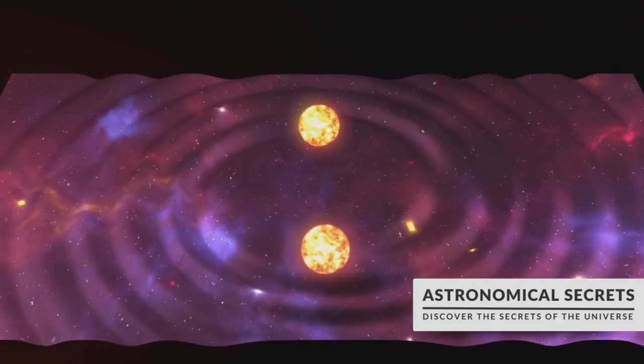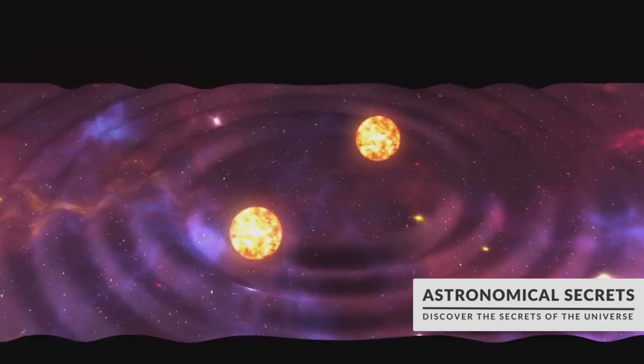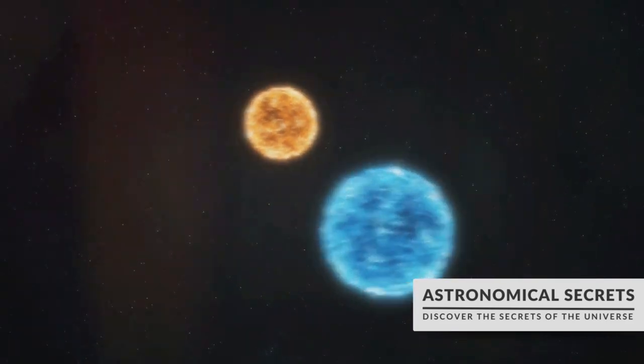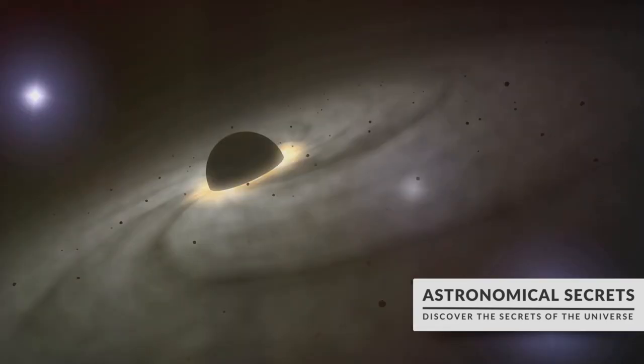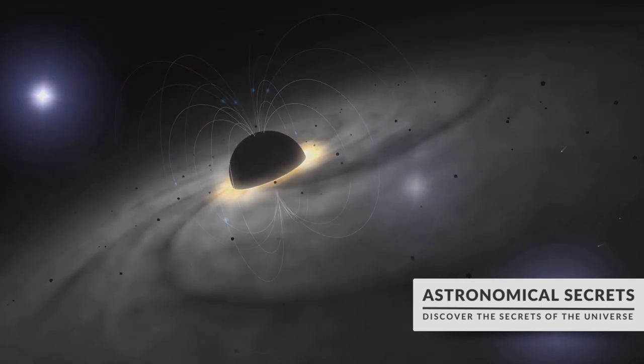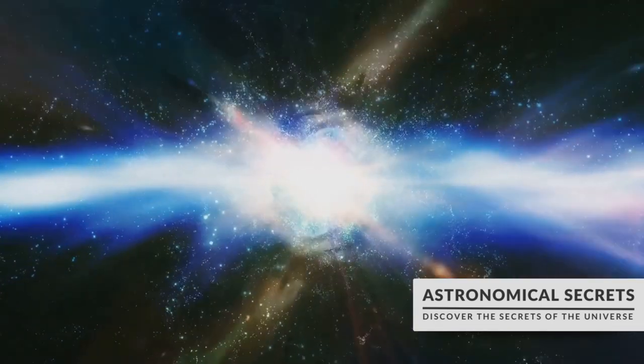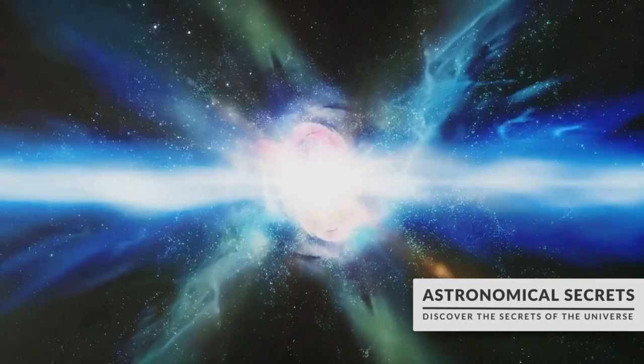Neutron stars are not only incredibly dense but they also spin at high speed. Some of them can rotate hundreds of times in a single second. This rapid spinning combined with a strong magnetic field makes them some of the most powerful objects in the universe.